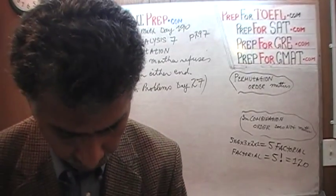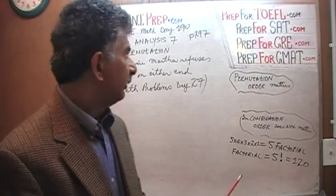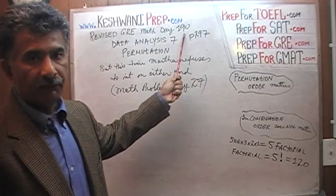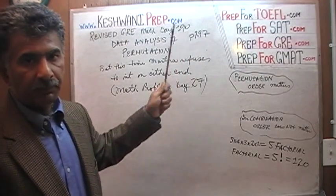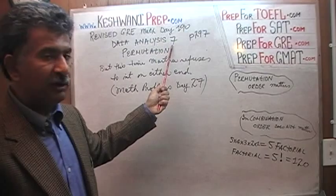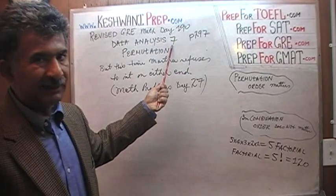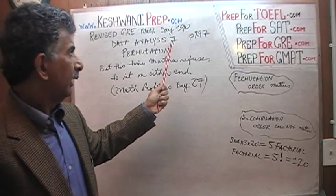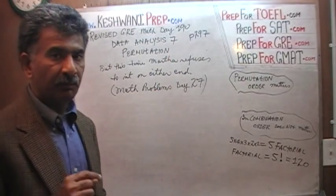We have been solving GRE math problems out of this book here, the official guide to the GRE, the revised general test. The problem that we are about to solve is the one that you will find on page number 297 and today is our lesson number 190. The problem that we are about to solve is a continuation of problem number 7 but it is not in the book.